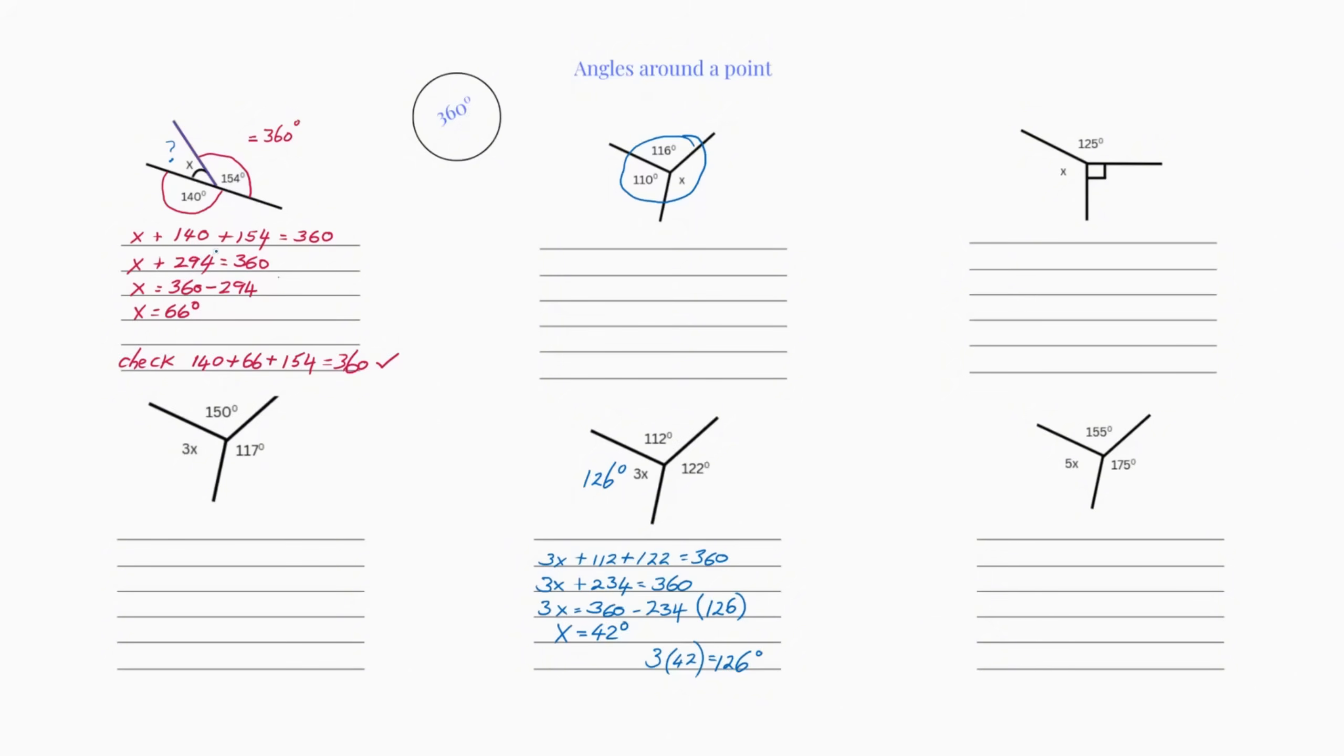What you need to do, as in all algebra, you take this plus 294 over the equals sign and it becomes a negative. So it is now 360 negative 294, which gives us 66 degrees. Our missing angle is 66 degrees.